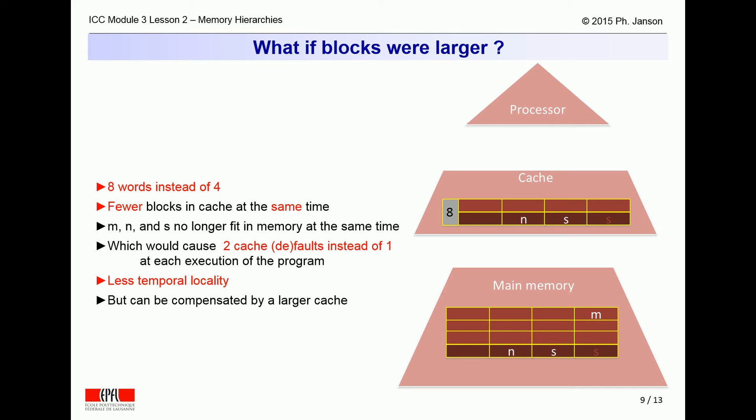This would cause two cache faults, instead of one, at each execution of the program. Thus, in this case, we have a degraded temporal locality, although this could be compensated by a larger and more expensive cache.